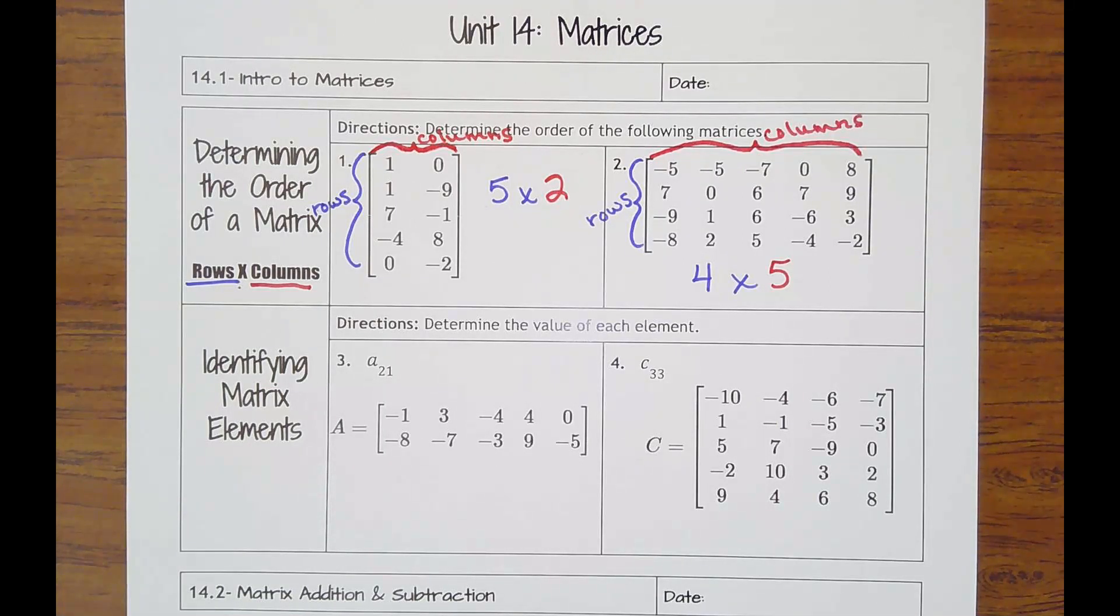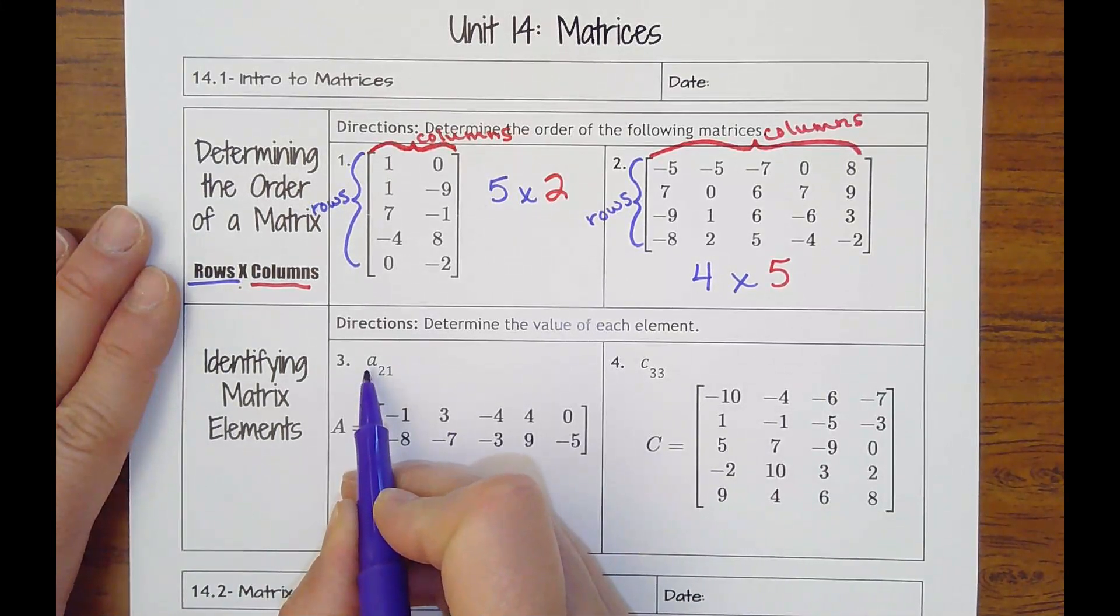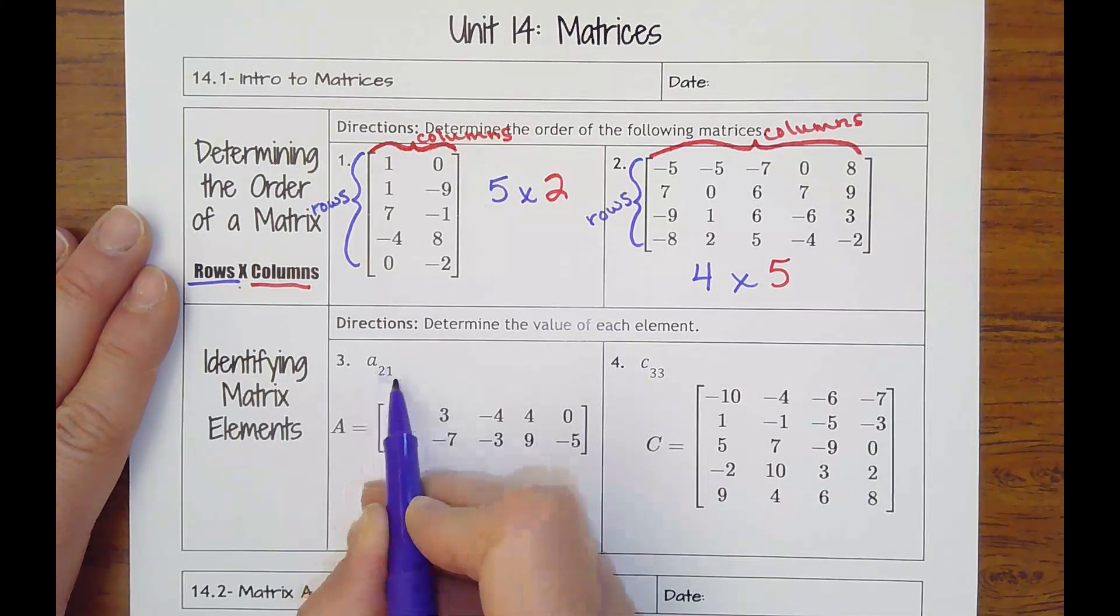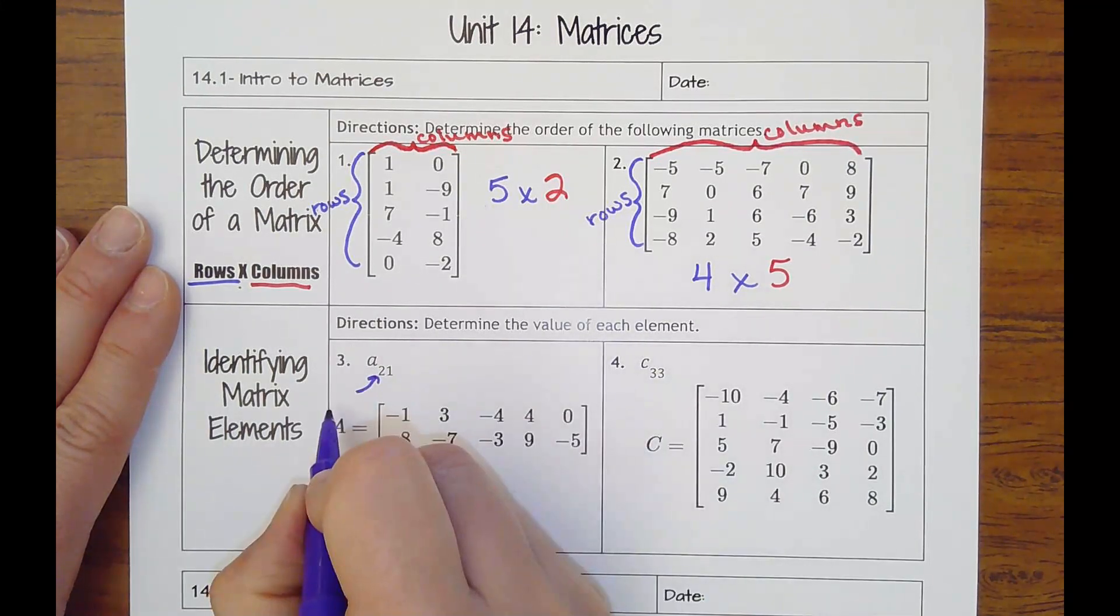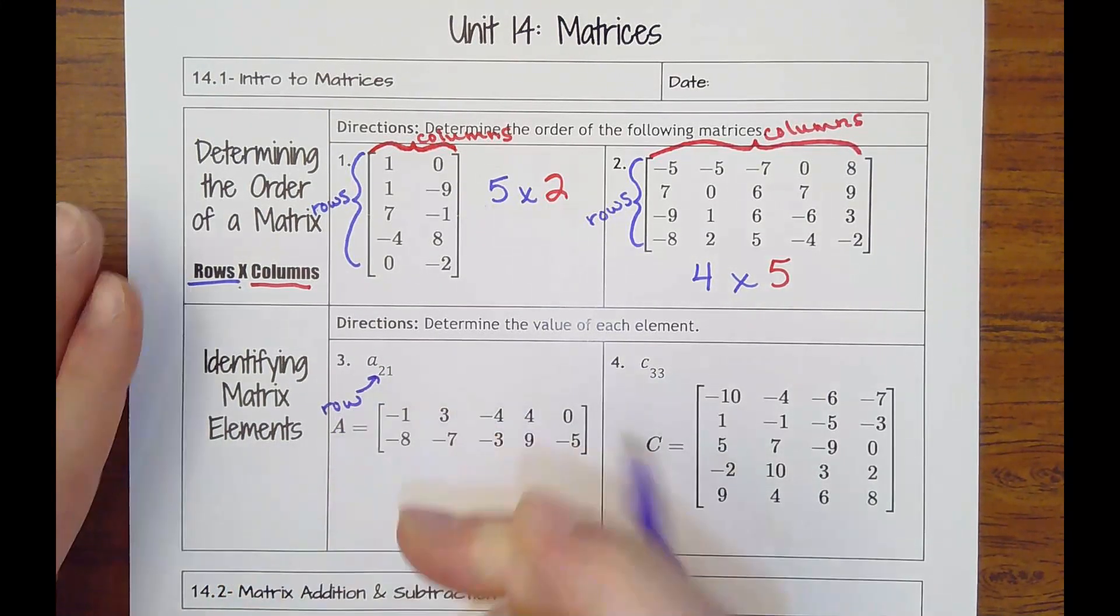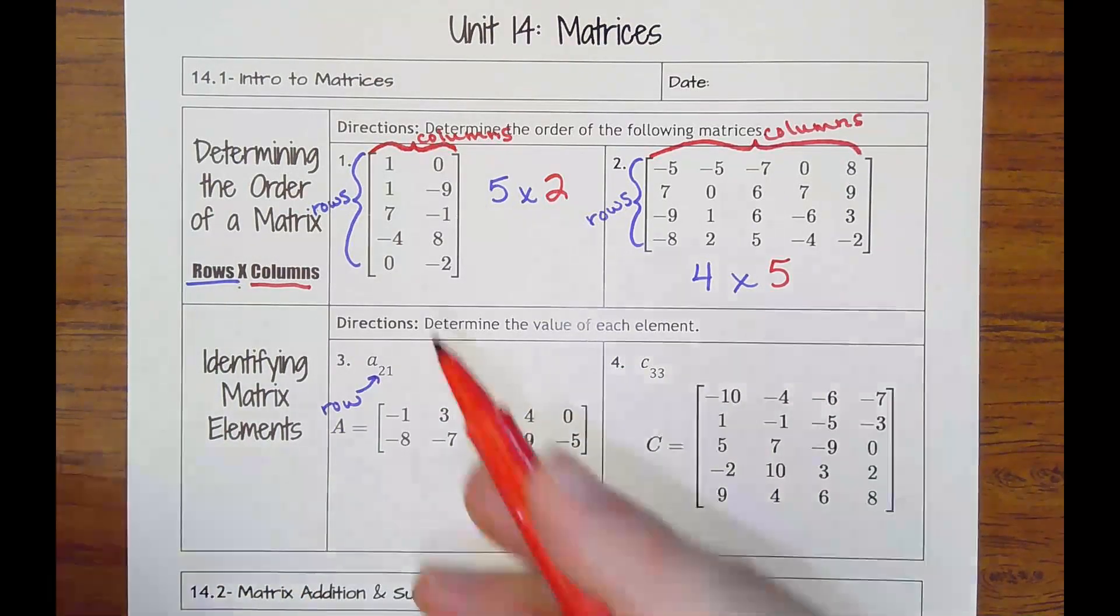Then they might want you to identify specific elements or numbers within the matrix. So it'll look like A or B or C, and then we'll have subscript text which is numbers put below. The first number is going to be the row they want you to find, and then the second number is going to be the column.